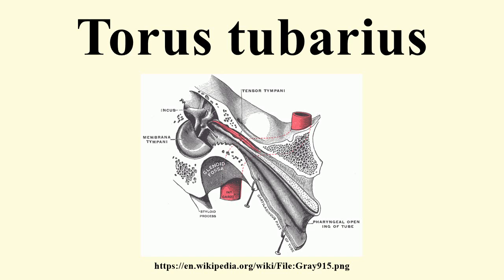Anteriorly, the second and smaller fold — the salpingo-palatine fold, smaller than the salpingo-pharyngeal fold — contains some fibers of muscle. Called the salpingo-palatine muscle by Simpkins, it stretches from the superior border of the lateral lamina of the cartilage, antero-inferiorly, to the back of the hard palate.